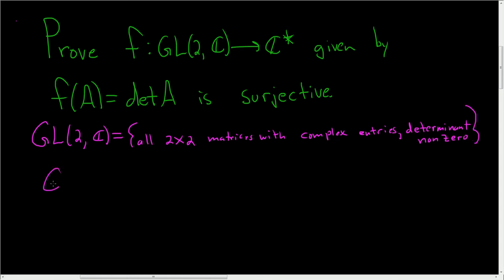And then this set here, the C with the star, this is all of the complex numbers minus the complex number 0. So it's all of the non-zero complex numbers.